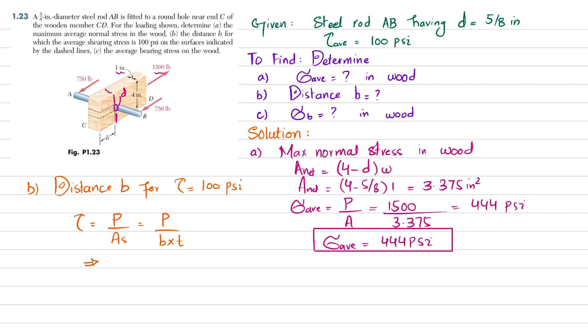We have the shearing area, so B into T equals P divided by shearing stress. B equals P divided by shearing stress into thickness. So P load is given as 1500 divided by shearing stress 100 multiplied by thickness T which is 1. Since we have two shearing areas, one along this and the second one along this, we will multiply it with 2.